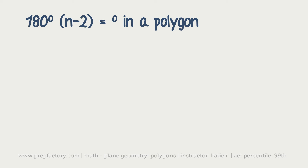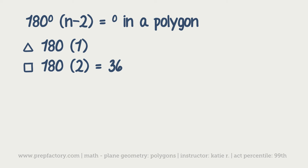If you forget that formula, it's 180 degrees times (n minus 2). In a triangle there are three sides and we only want 180 degrees, so we take away two, leaving one — or 180 degrees. So for a triangle it's 180 times 1, which checks out, and for a square it's 180 times 2, or 360 degrees. Another way to remember it: just add 180 each time you add a side — triangle, add 180 for square, add 180 for pentagon, add 180 for hexagon.